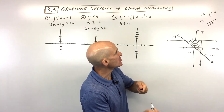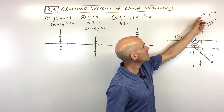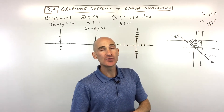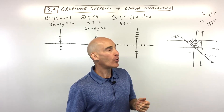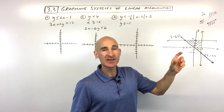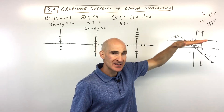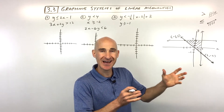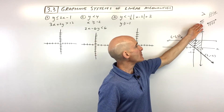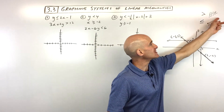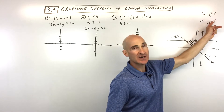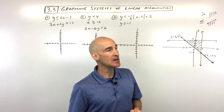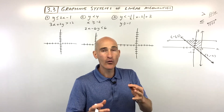A quick refresher: when we have greater than or less than but not equal to, it's going to be a dashed or dotted line. We can use the test point method, or the method where you get the y value by itself — if y is greater, we're shading above; if y is less than, we're shading below. If it's less than or equal to or greater than or equal to, that means we're dealing with a solid line, meaning it includes the points on the line. Then you test to see what side of that line you should shade.